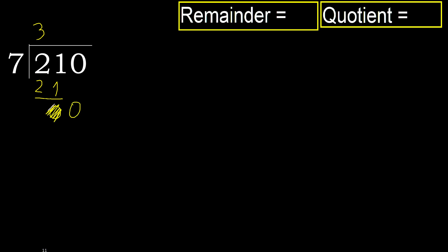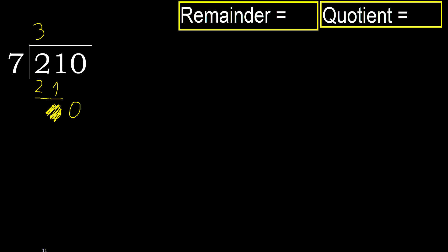Bring down 0. 0 is less, therefore next. There is no more number, so we are finished. Complete with 0, because the division finished with this number. 210 divided by 7 is 30.